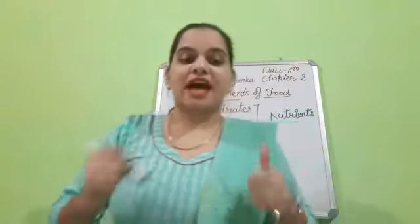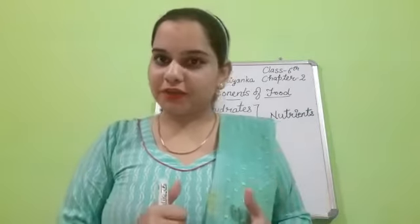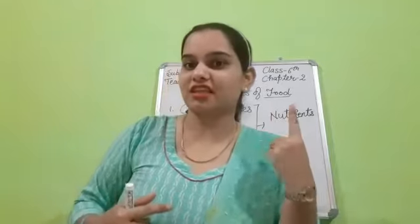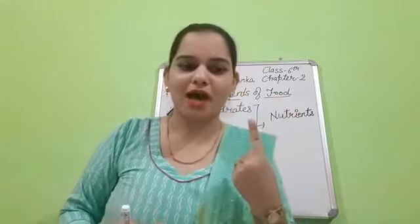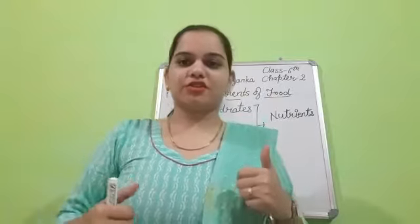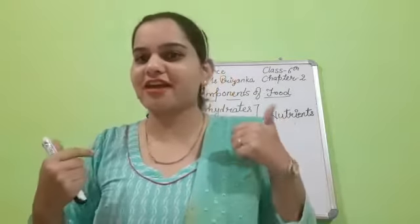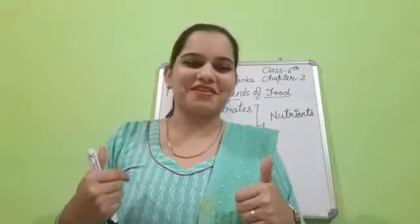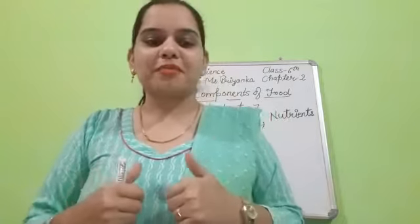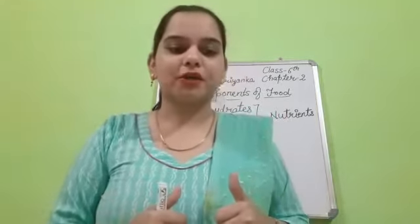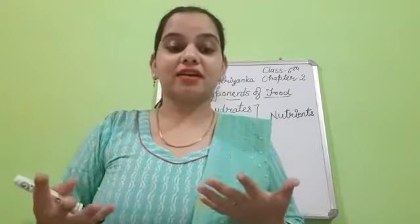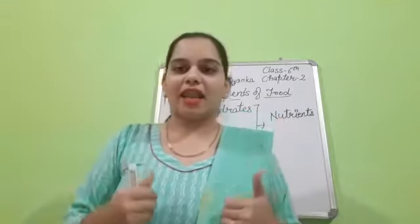Now, certain types of food contain only one nutrient. For example, sugar. Sugar contains only one nutrient — which one? Carbohydrate. Carbohydrate. Great. Other types of food may be rich in one particular nutrient but may contain other nutrients as well.